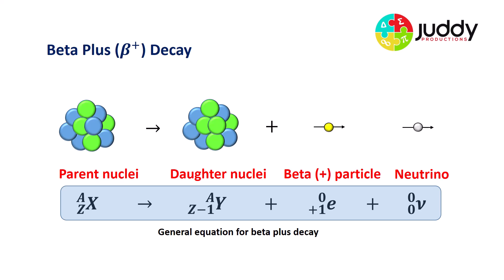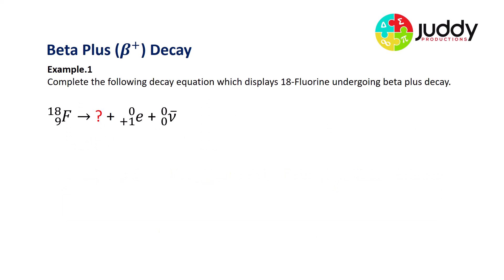Here's our general equation for a beta plus decay. What we find is the daughter nuclei has the same mass number as the parent nuclei. However, the atomic number of the daughter nuclei decreases by one from the parent nuclei. So let's look at three examples.